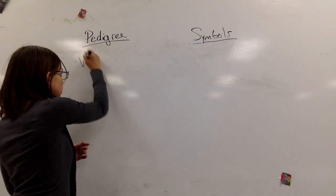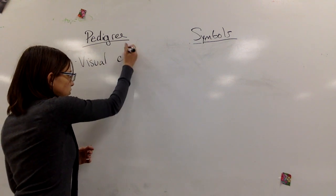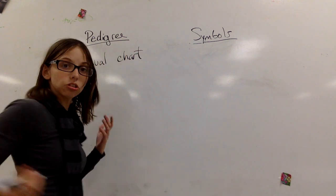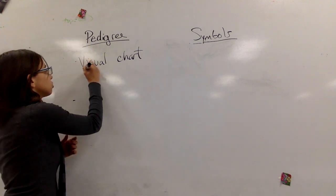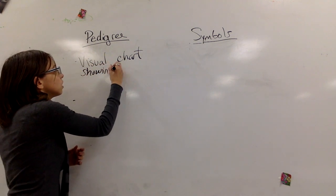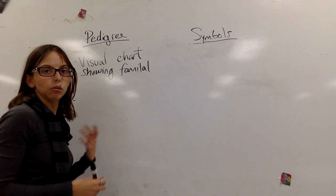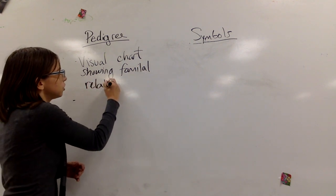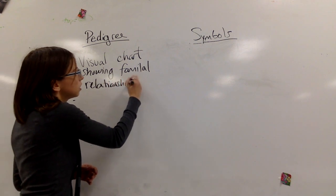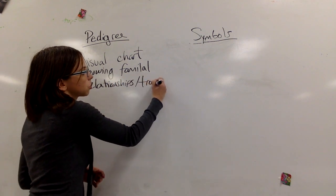Pedigree. What is a pedigree? It is a visual chart showing basically how people are related, people or organisms, anything. It shows us how they're related and their traits.